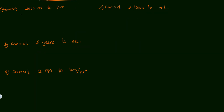Let's convert 2000 meters to kilometers. Since the desired output is kilometers, I put kilometers on the numerator and meters on the denominator of the conversion factor. We know that 1 kilometer equals 1000 meters, so the meters cancel. The three zeros cancel, and 2000 meters equals 2 kilometers.